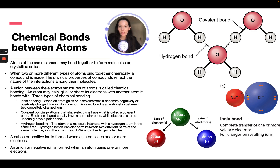Hydrogen bonds form when atoms of molecules interact with a hydrogen atom in the same area. Hydrogen bonds can also form between two different parts of the same molecule, as in the structure of DNA in larger molecules. To review: if a neutral atom loses an electron, it becomes a cation and is positively charged. If a neutral atom gains an electron, it becomes an anion and is negatively charged.